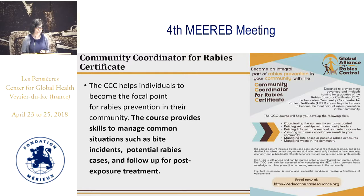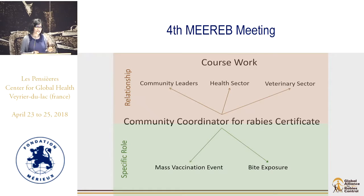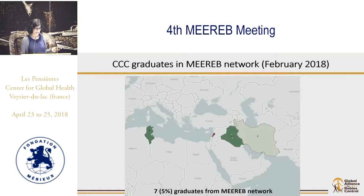The Community Coordinator for Rabies Certificate, or CCC, builds on the skills learned in the Rabies Educator Certificate and helps individuals become a focal point in their community for rabies prevention — covering dog bite exposure, mass vaccination campaigns, and acting as a liaison between animal health professionals, human health professionals, and the community. The course helps them build relationships with community leaders, the veterinary sector, and the human health sector. This role is not meant to replace animal and human health professionals — it is meant to support them. We've just got under 150 graduates, with 5% from MREB.